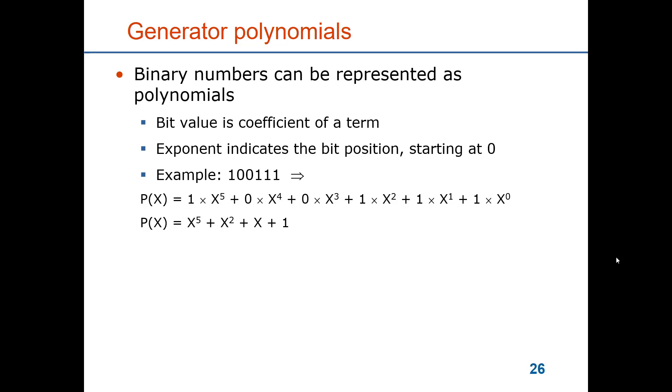So you see here that the order of the polynomial is one less than the number of bits in the generator bit string. The polynomial can be simplified because we don't have to write out the coefficient of one and all the terms with coefficient of zero will disappear. So the polynomial for this bit generator will eventually become x to the power of five plus x to the power of two plus x plus one.